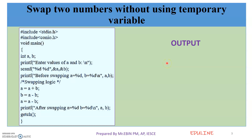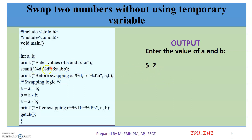We will print the values of A and B before swapping. Then, after the swap logic executes, we will print the values of A and B again after swapping.